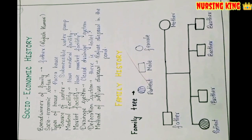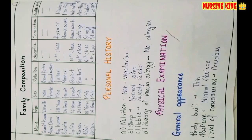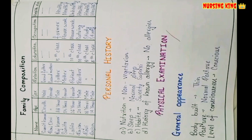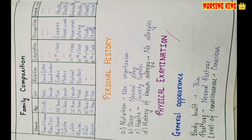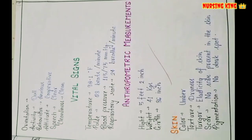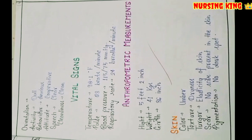In the socioeconomic history, cover the economic function in the family, type of family, source of income — yearly or monthly — family composition, and family tree. Then personal history, like nutrition and sleep history, and any allergies or not. Then begin the physical examination: general appearance, vital signs, and anthropometric measurements.